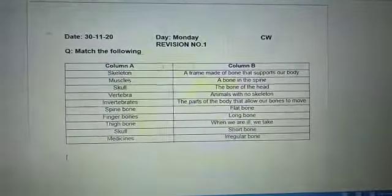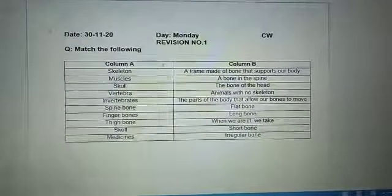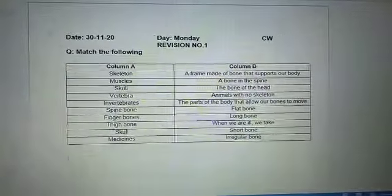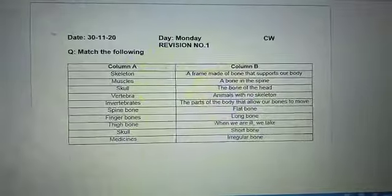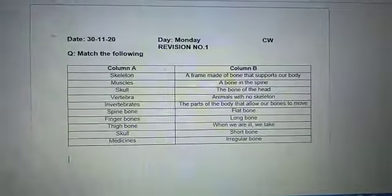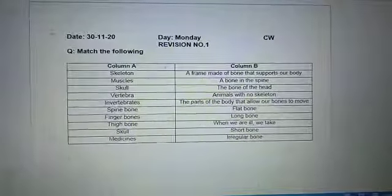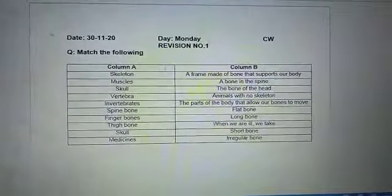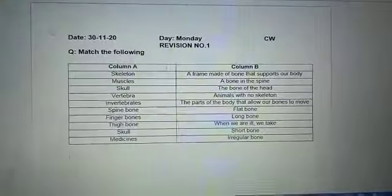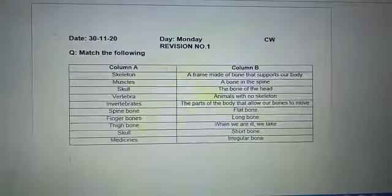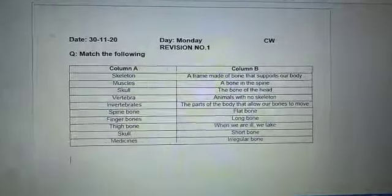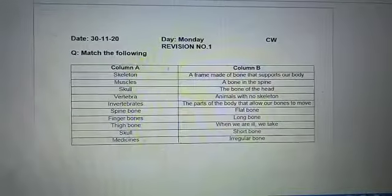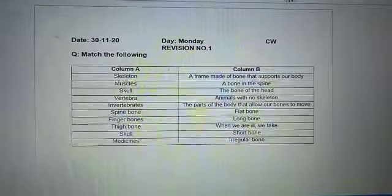The first we are having skeleton — a frame made of bone that supports our body. Number 2 we are having muscles, that will match with the parts of the body that allow our bones to move. Third we are having skull — the bone of the head. The next one is vertebra — the bone in the spine.